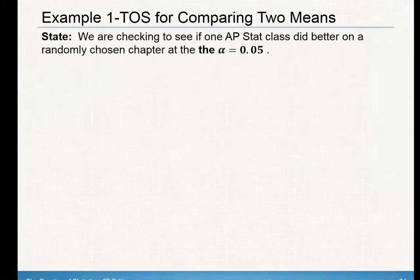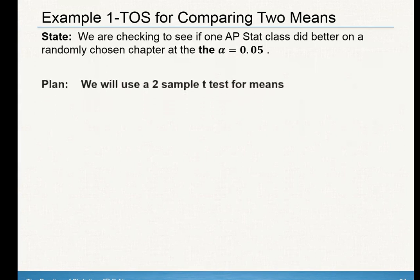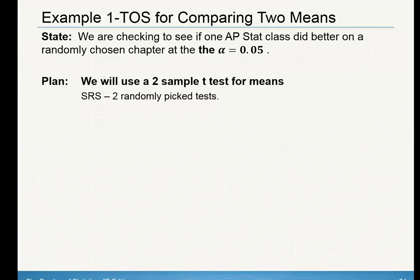Let's carry out this test of significance — see what you can remember from our state, plan, do, conclude. State is always what we're doing here: we're checking to see if one AP stat class did better on a randomly chosen chapter at alpha equals 0.05. Make sure you state the name of the test. Technically you have six conditions because you have two samples, so make sure you're including the correct wording to show that you have multiple samples here.